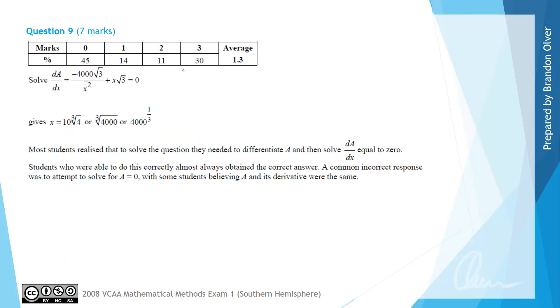Once again, about 30% of students managed to get full marks for this question. However, nearly 50% of students managed to get no marks. Most students realized that they needed to differentiate A and then solve the derivative equal to 0. Students who were able to do this correctly almost always obtained the correct answer. A common incorrect response was to attempt to solve A equal to 0, with some students believing that A and its derivative were the same. A big important note from this question is that if you're asked to maximize or minimize something, you should probably look at finding the derivative and making it equal to 0 as a starting point to the question.